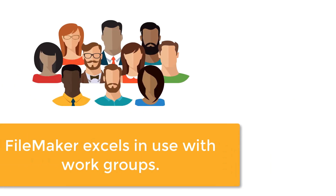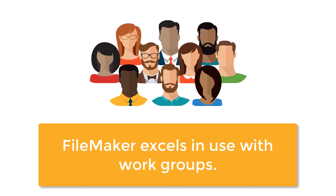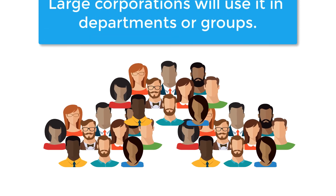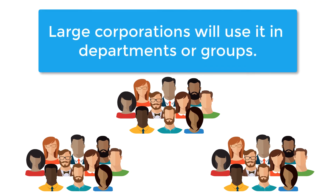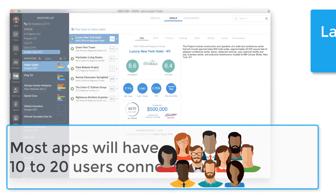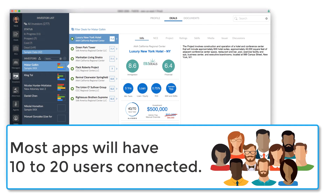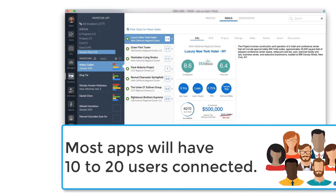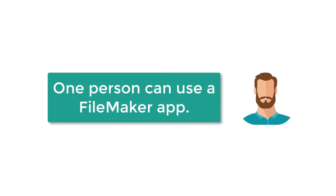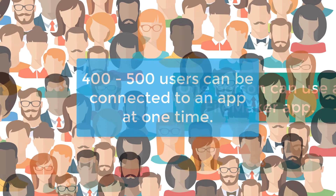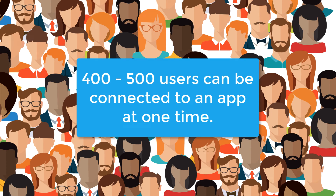FileMaker's sweet spot, where it really excels, is with work groups. Most organizations, even giant corporations, have different departments or groups that work to complete specific jobs. Those groups range from two or three individuals to maybe 50, 70, or even 100 staff. Most FileMaker custom apps have 10 to 20 users connected at any given time. Of course, a single individual can use FileMaker themselves. However, a FileMaker custom app can have more than 400 or 500 users connected at a single time, so FileMaker has a broad range of scalability.